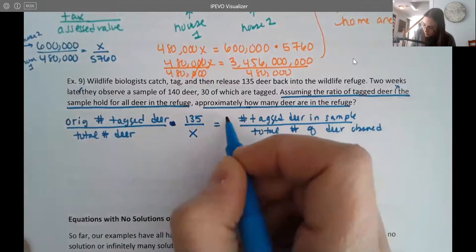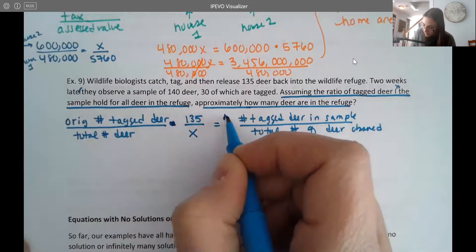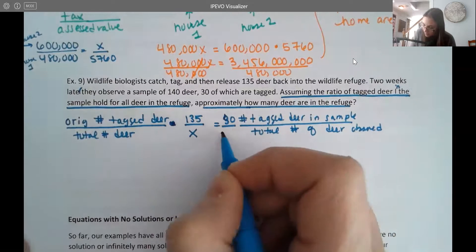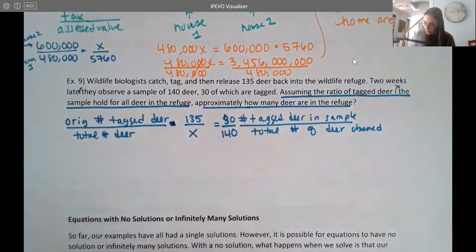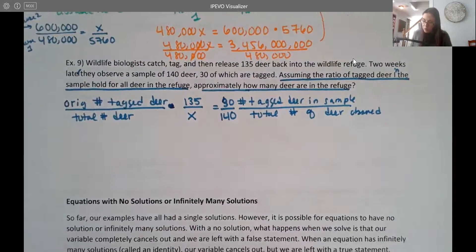So in our sample, we had 30 deer who were tagged, and we had 140 observed. Okay. So notice what they're doing here.